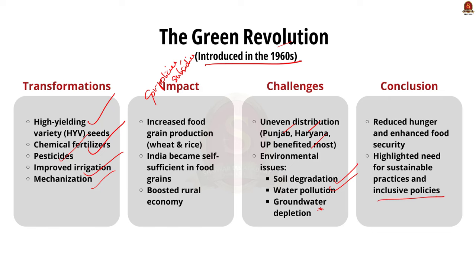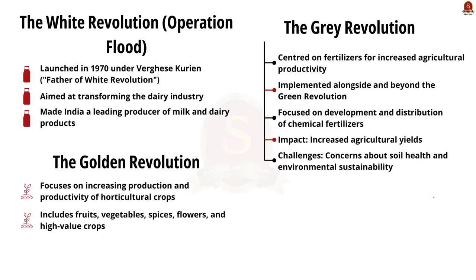The White Revolution, also known as Operation Flood, was a significant initiative aimed at transforming the dairy industry and making India self-sufficient in milk production. It was launched in 1970 and headed by Verghese Kurien, often referred to as the Father of the White Revolution. This movement was instrumental in making India one of the largest producers of milk and dairy products in the world.